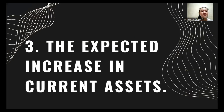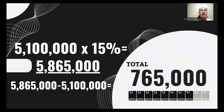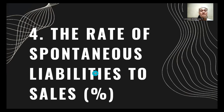Number three, the expected increase in current assets. Current assets of 5,100,000 times the expected sales increase of 15% equals 5,865,000, minus 5,100,000, equals 765,000. That is the expected increase in current assets.